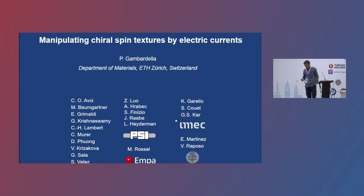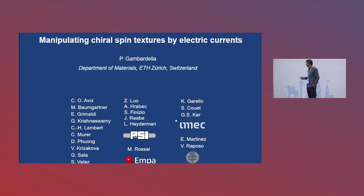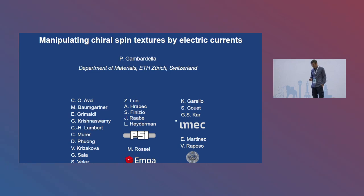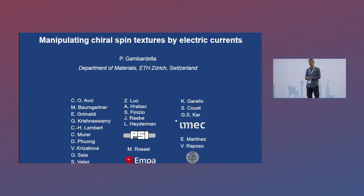We will change subject with respect to the first talk and discuss the manipulation of spins by electric currents — what we call spintronics or spin-orbitronics nowadays. Sometimes I ask myself whether we are doing anything new in this field. When I listen to a superconductivity talk, I'm reassured because superconductivity has been around for more than a hundred years and we're still trying to understand and improve it.